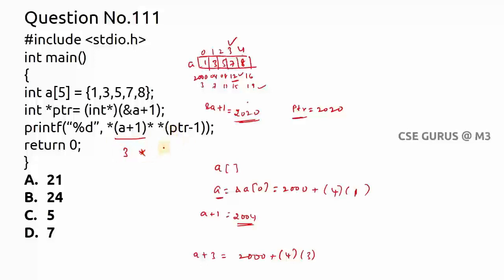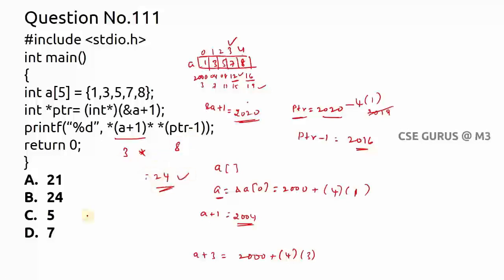Now *(ptr - 1): ptr is 2020, and minus one does not mean 2019 — it means the previous integer-aligned address, so 2020 - 4 = 2016. The value inside address 2016 is 8. Therefore the expression is 3 × 8 = 24. The answer to question 111 is option B.